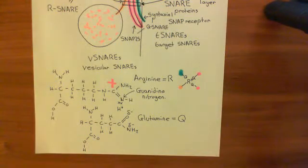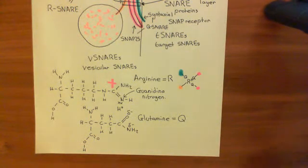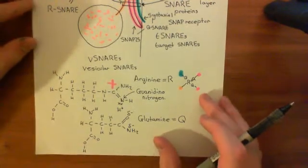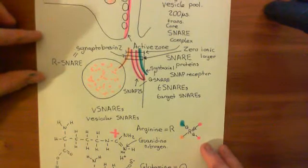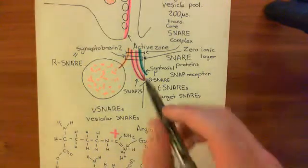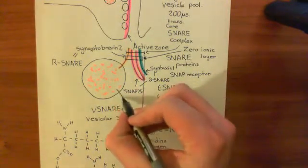Welcome back to this video in which we are discussing the clamp theory for SNARE proteins involved in synaptic neurotransmission. So far we've discussed the formation of these core SNARE complexes. Now, you're not just going to form one of these — you'll form multiple of them.